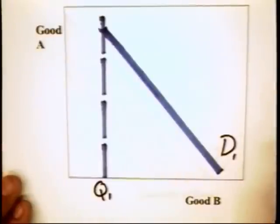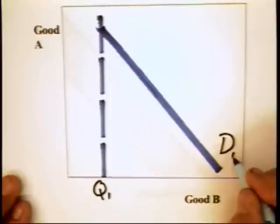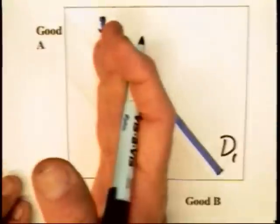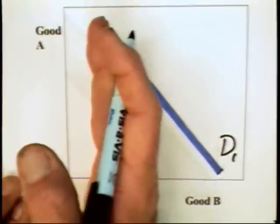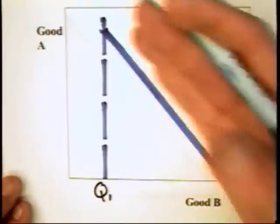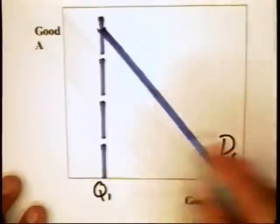But then there are other consumers out there who are rational, who do in fact consider the price, and they have a demand curve that looks like D1. Well, to get the full market demand, I simply add the quantity of the irrational consumers or the non-rational consumers to the quantities demanded at various prices of the rational consumers, and I get the downward sloping demand curve.